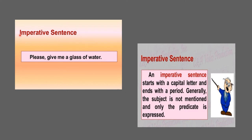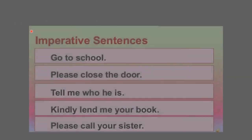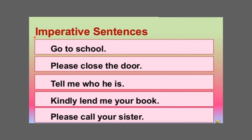Imperative sentences express a command, a request, or an order. They begin with capital letters and end with a period or full stop, and the subject is not mentioned — only the predicate. Examples: 'Go to school.' 'Please close the door.' 'Tell me who he is.' 'Kindly lend me your book.' 'Please call your sister.' These are all examples of imperative sentences.